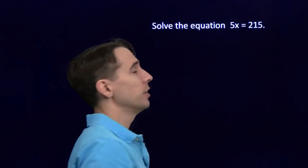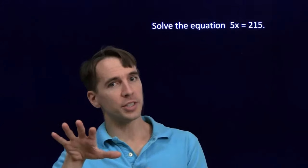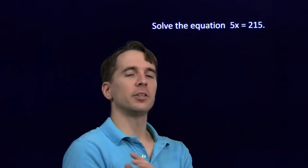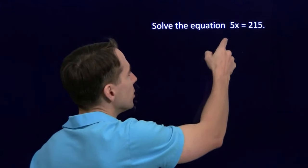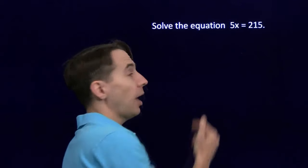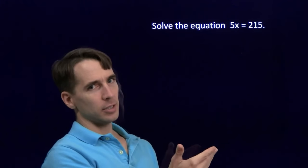Now the name of the game in solving equations, of course, is isolate the variable. Get the variable alone on one side of the equation. Whatever's on the other side, that's your solution. So we want to get the x alone here. It's being bothered by this 5. Now we can't just subtract 5. That'll give us 5x minus 5.